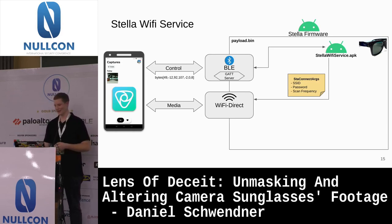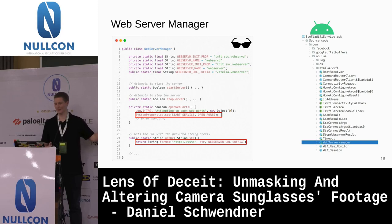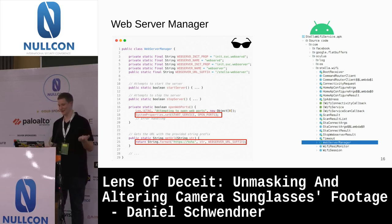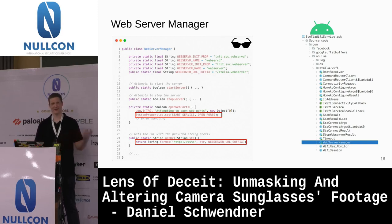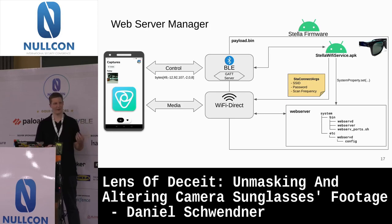The Stellar Wi-Fi Service APK controls the Wi-Fi Direct hotspot and sets security using connection arguments containing the SSID and password. But a Wi-Fi hotspot alone isn't enough — we need a web server. Looking further in the Stellar Wi-Fi Service APK, I found a class called WebServerManager with functions like StartServer, StopServer, OpenWebPorts, and GetURL. It uses SystemProperties.set to launch a background process and returns an HTTPS URL with the IP and the path slash StellarWebServer.